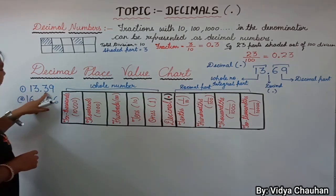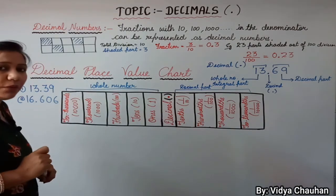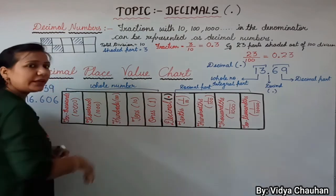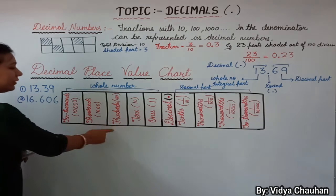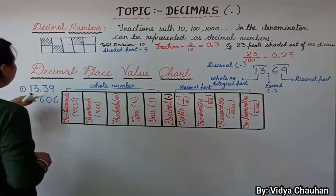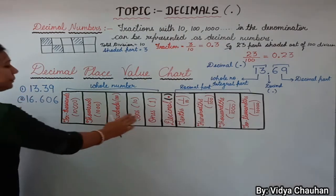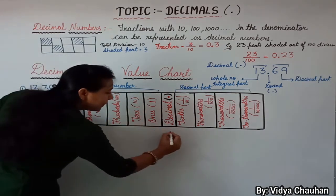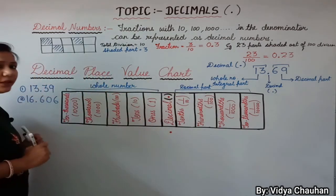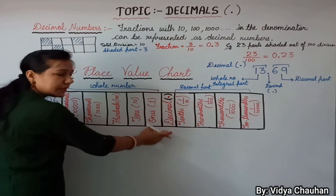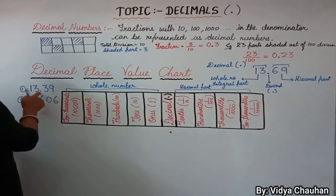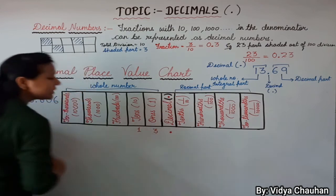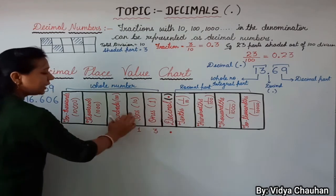Let's represent 13.39 on the place value chart. First, place the decimal sign in the center column. Then for the integral part: at the ones place we have 3, and at the tens place the digit is 1. So we write 13 on the left side — 3 at ones and 1 at tens.